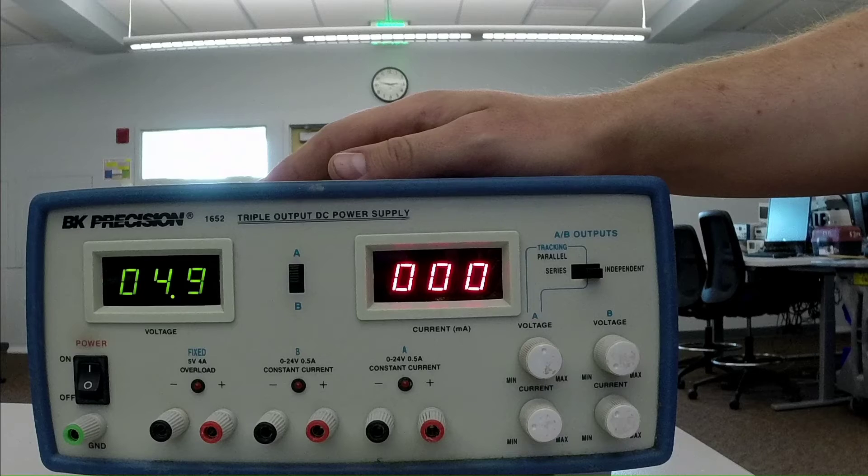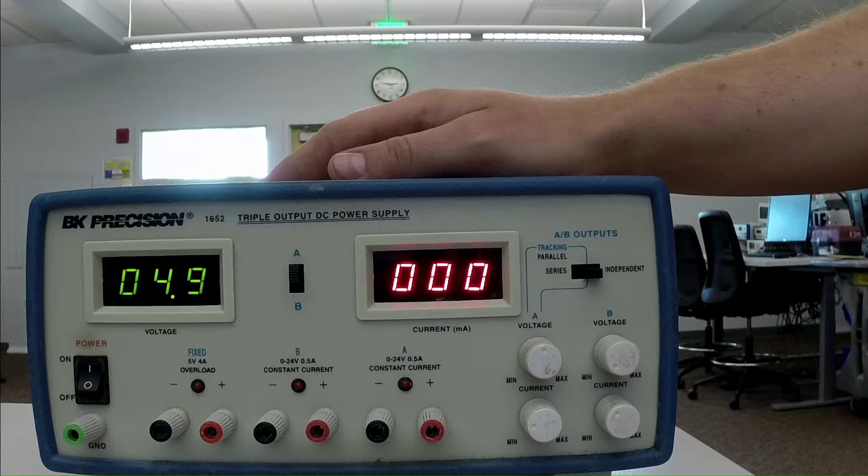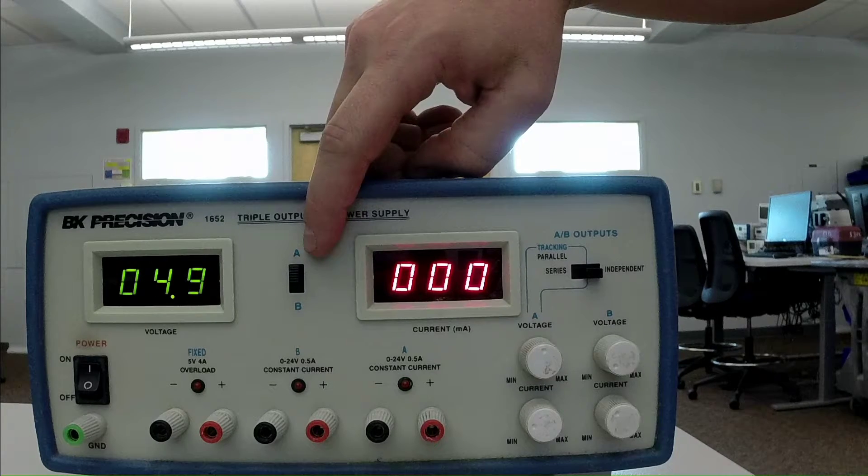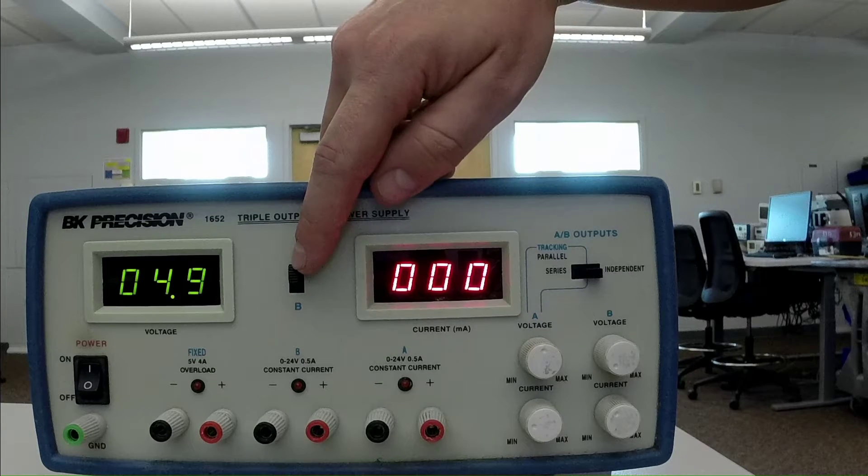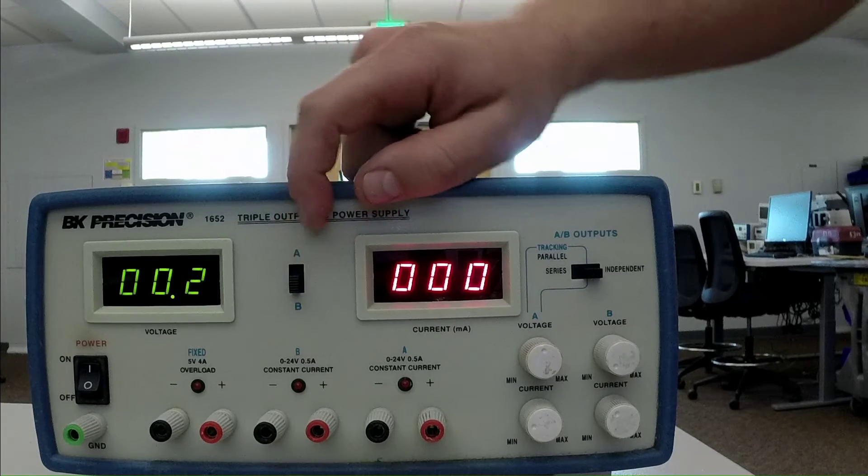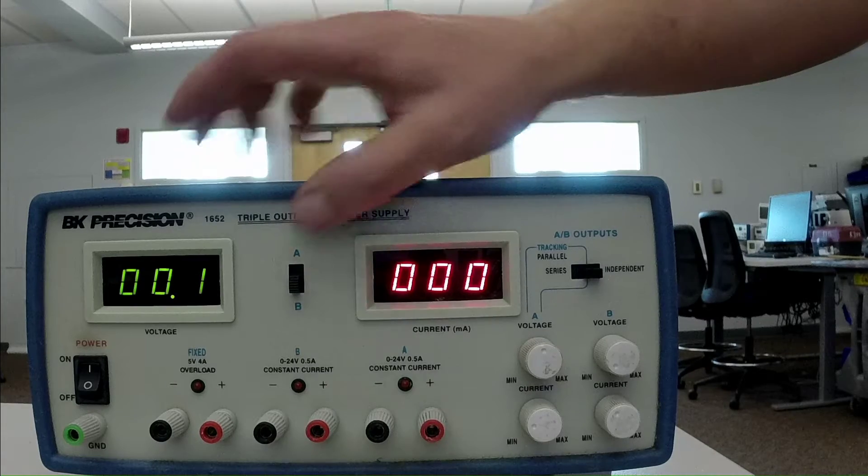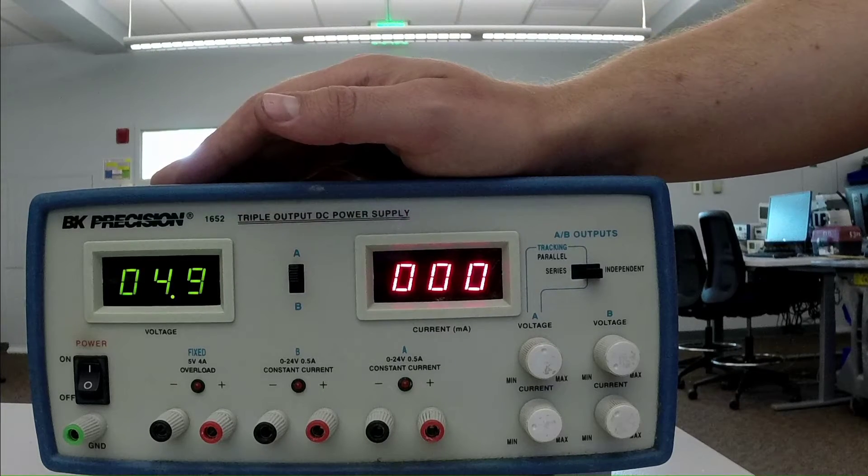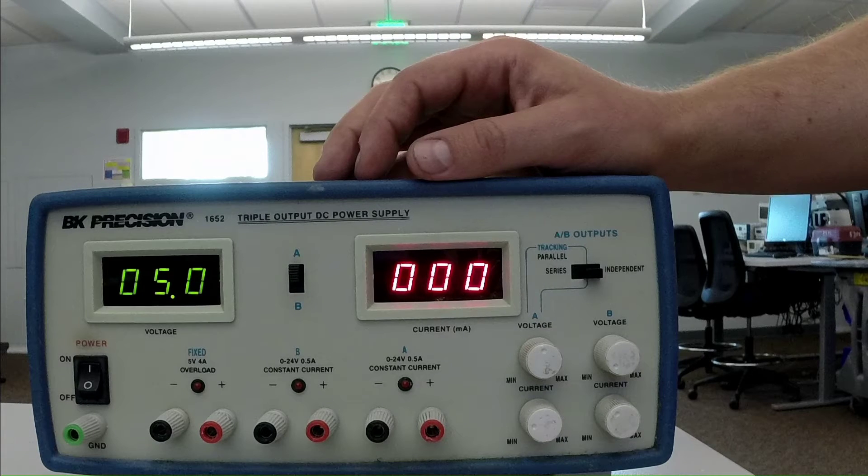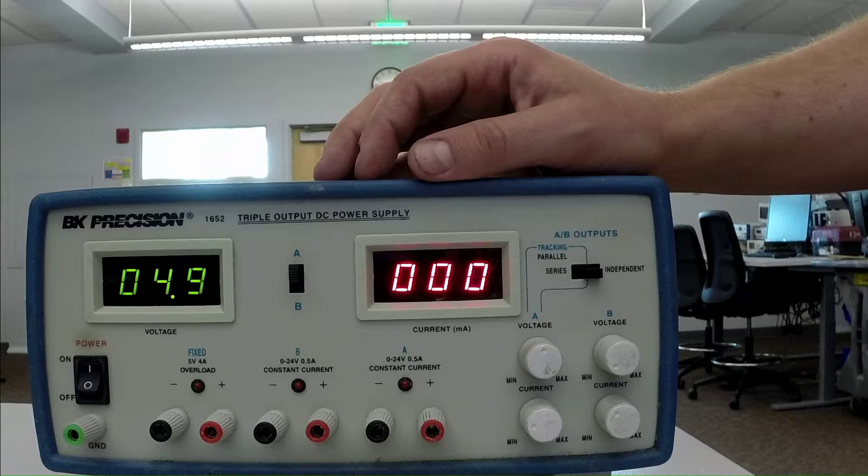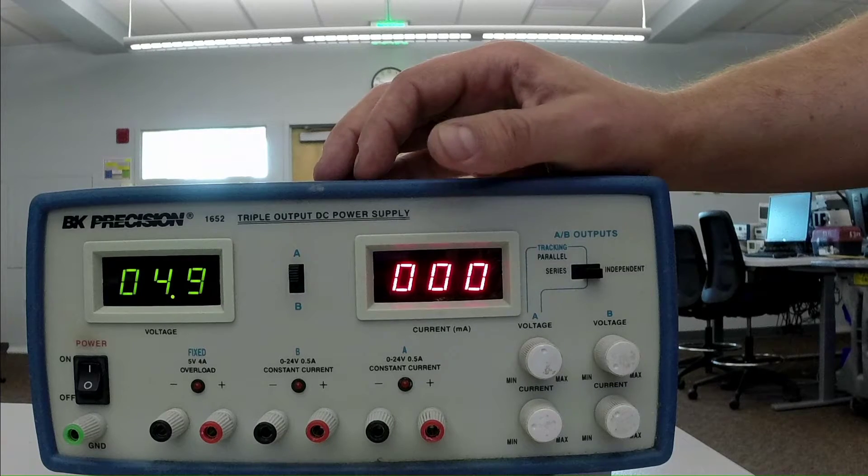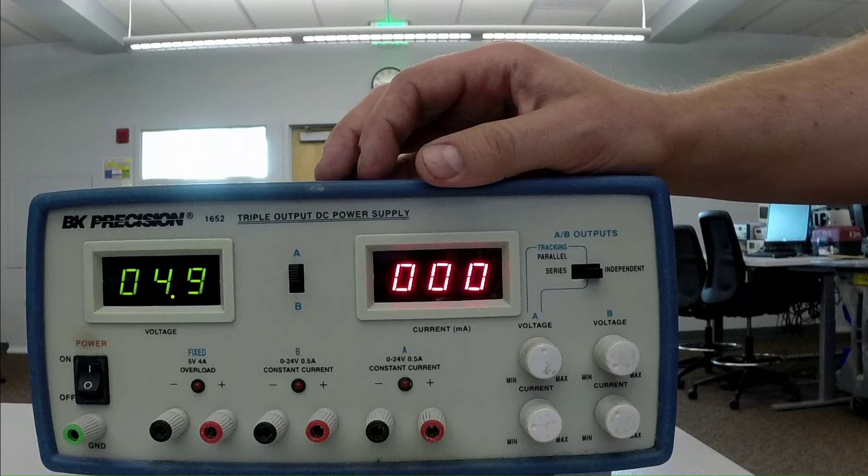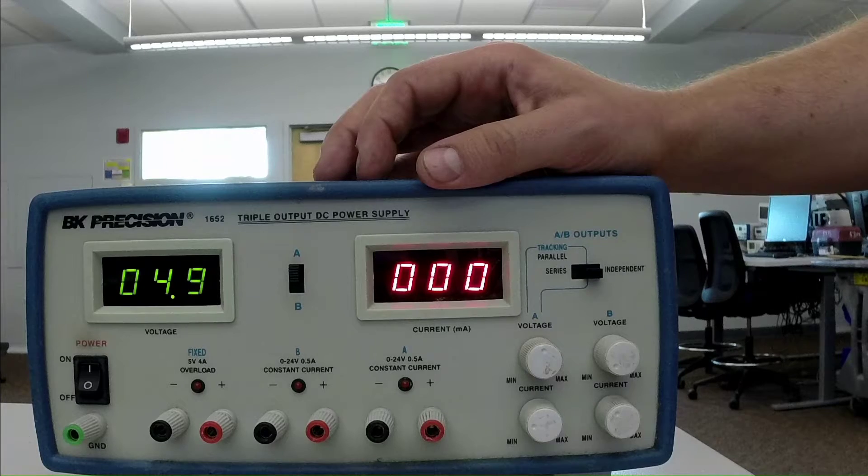And right now we are looking at the voltage and current readings for channel A. So we can switch and show which channel is visible on the display here with this switch in the center. So if we want to see what channel B is supplying, we can flip the switch there. Let's go back to A. And right now we can see that A is supplying about 5 volts. And we have an open circuit, so we are drawing 0 milliamps, which makes sense. Because there's an open circuit, there should be no current flowing.